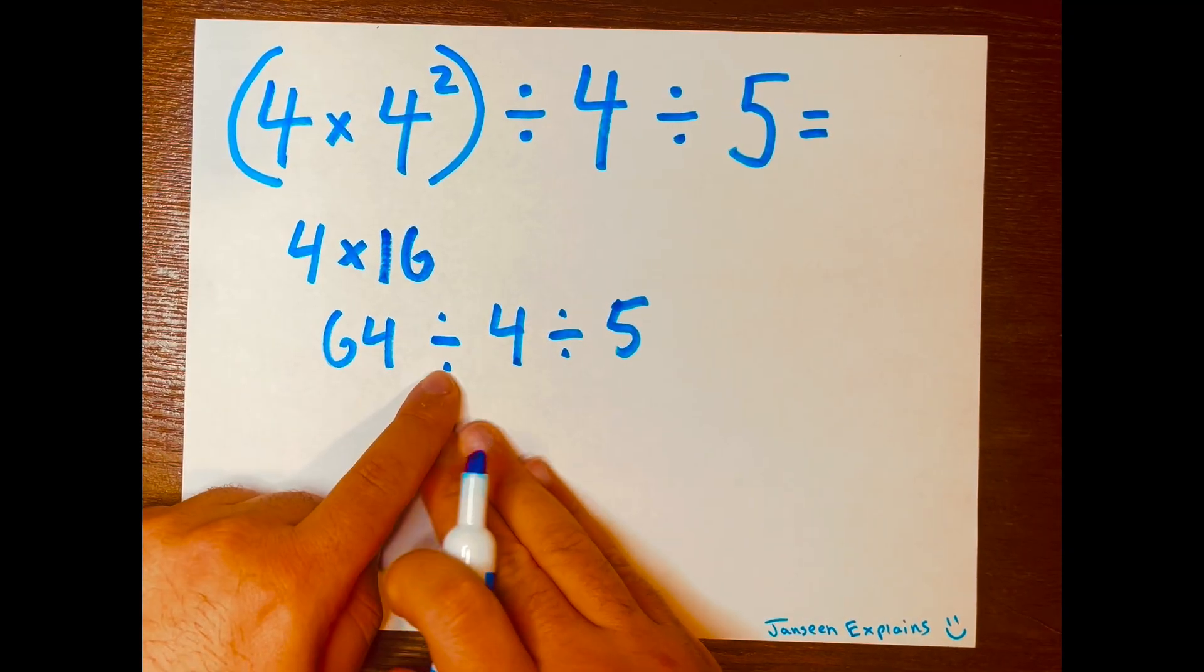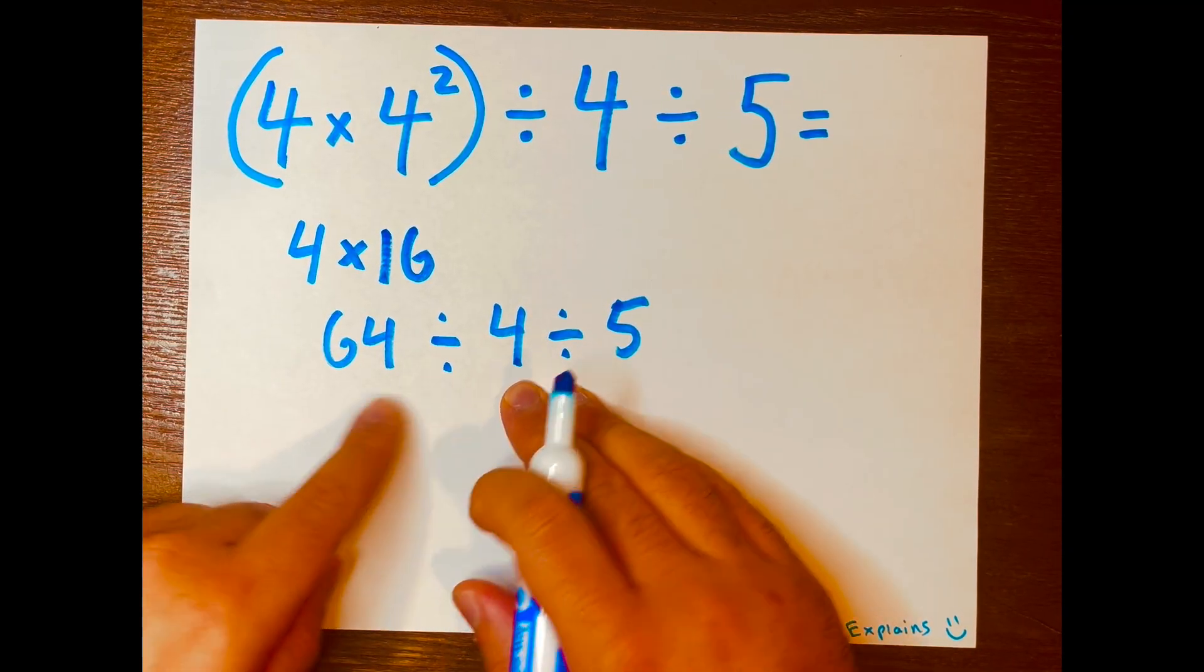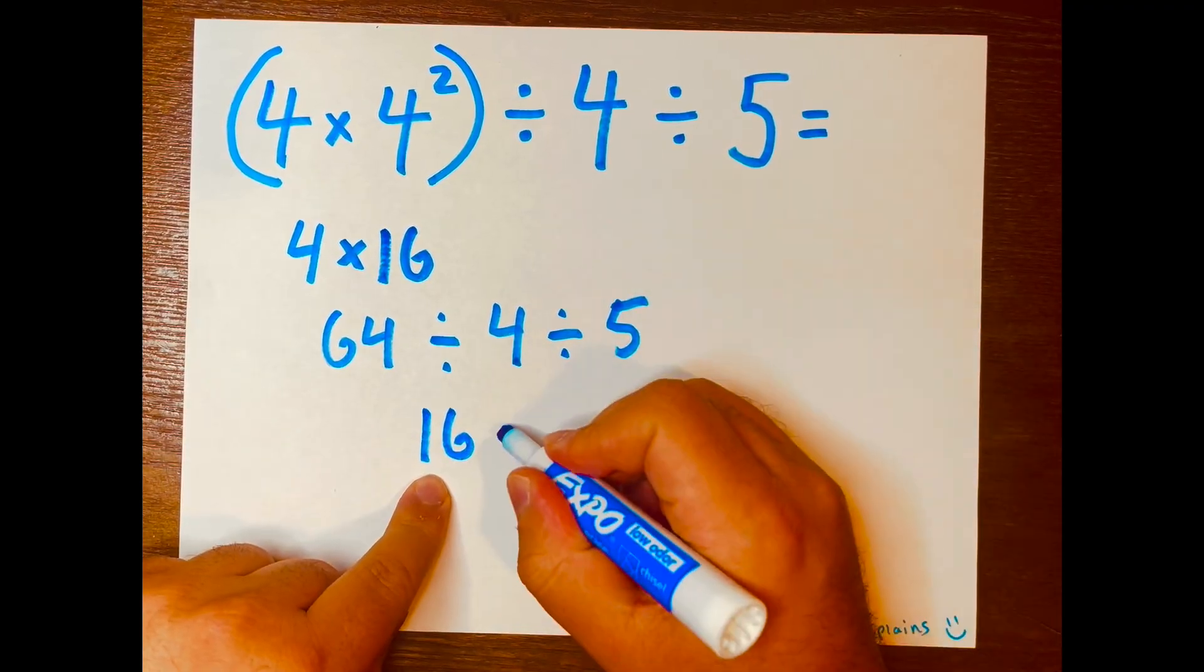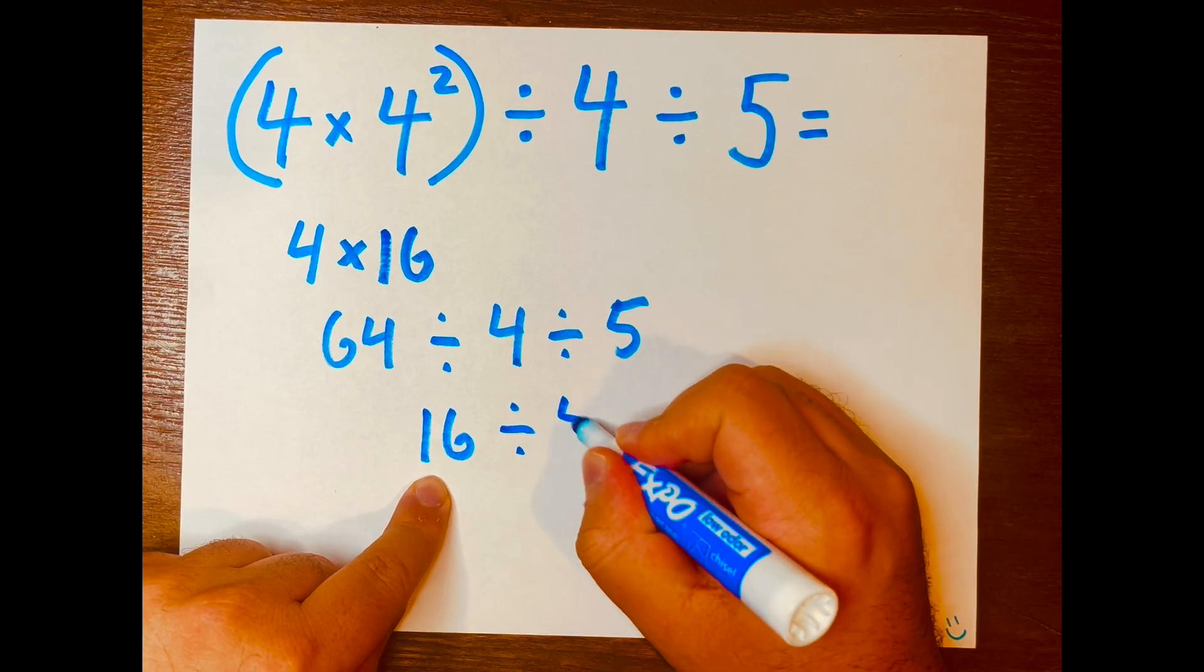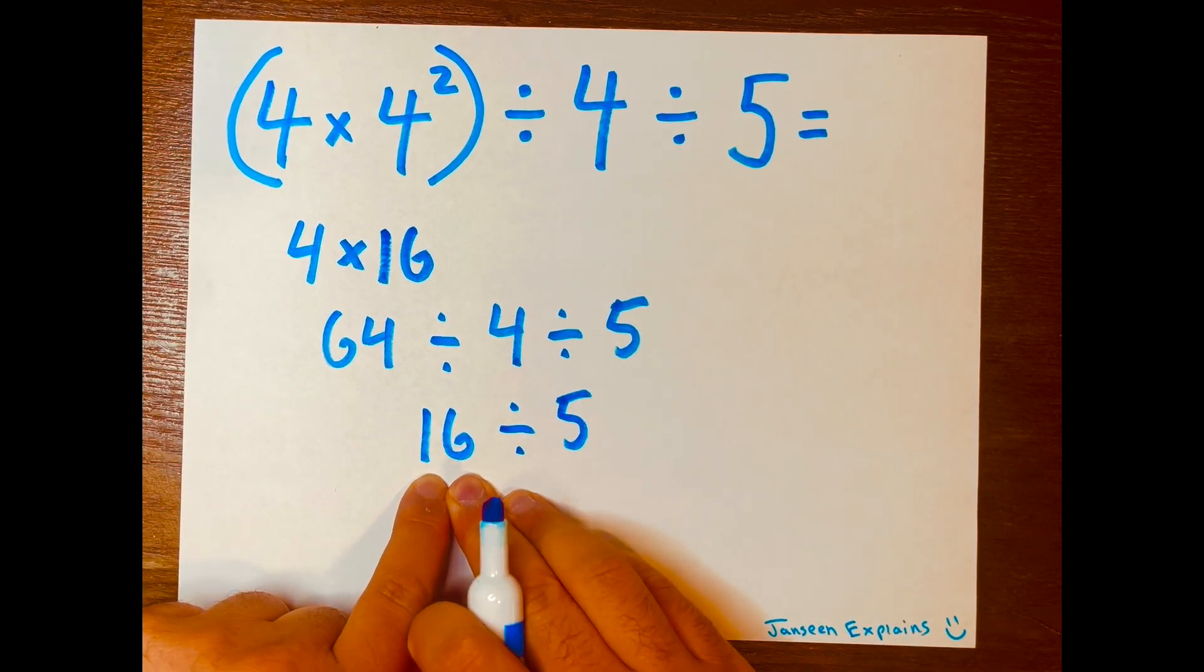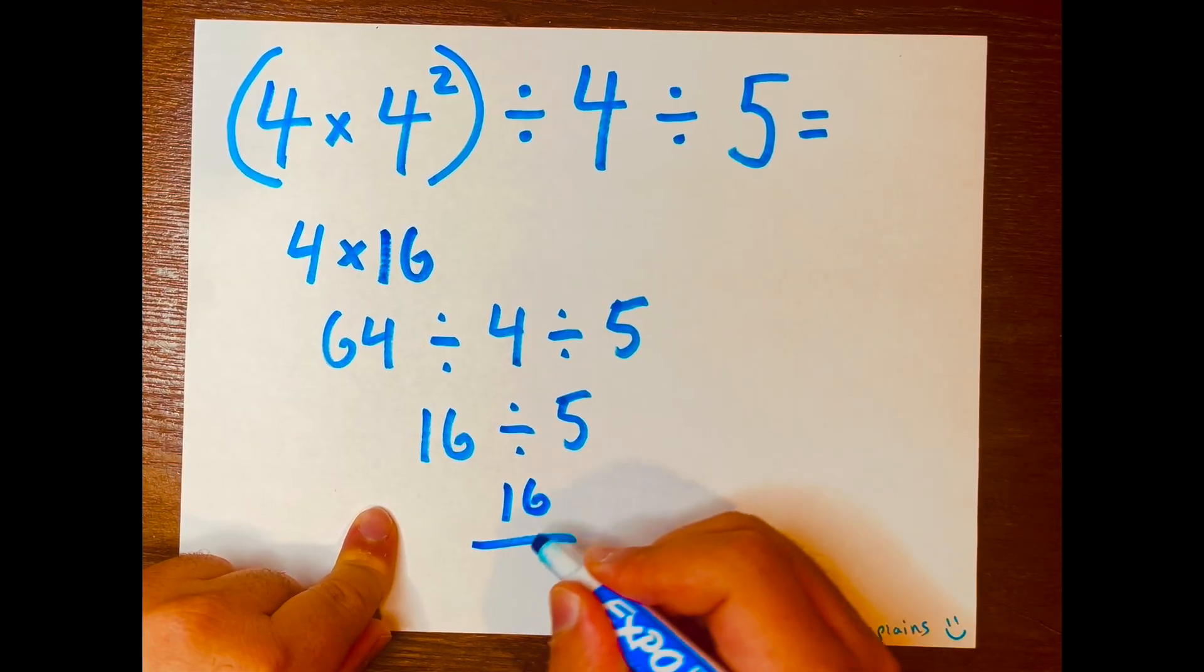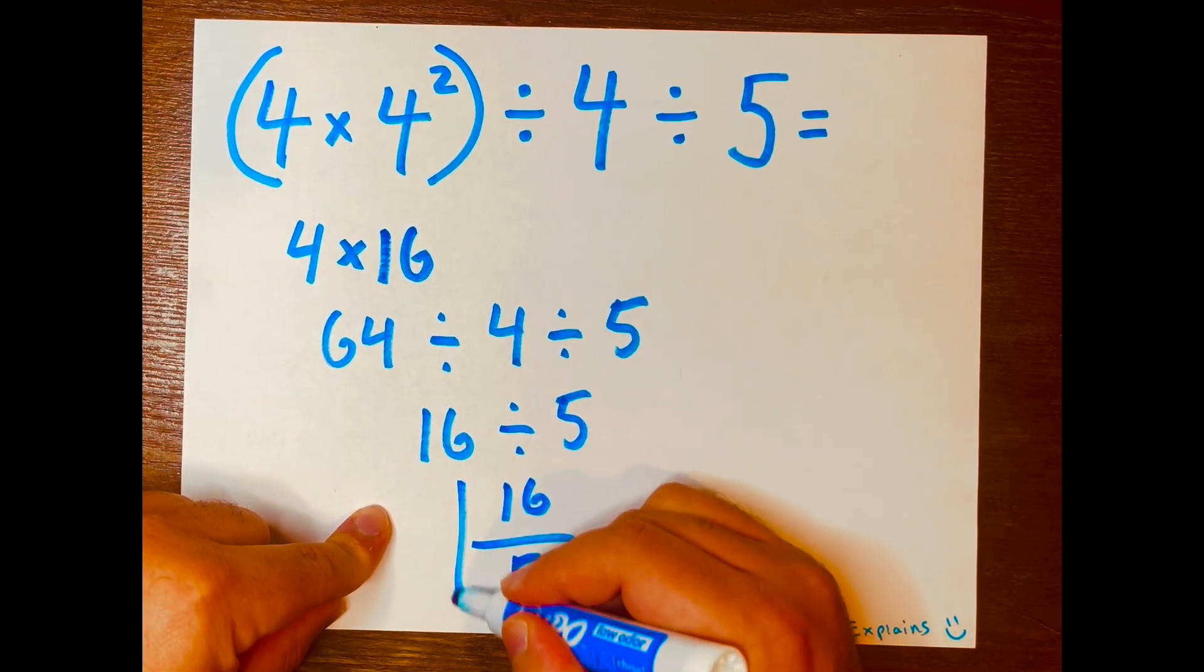64 divided by four equals 16. And then bring down the division symbol and the five down, and now we have 16 over five.